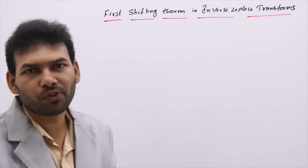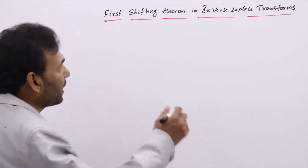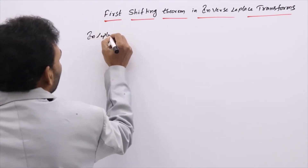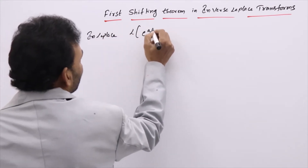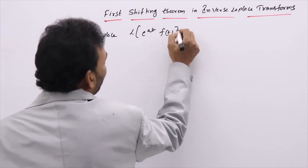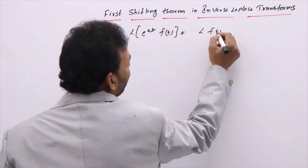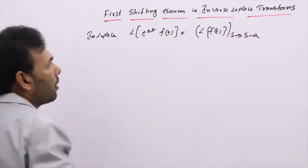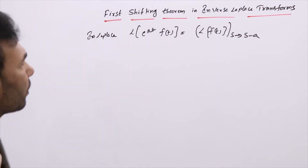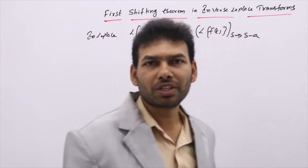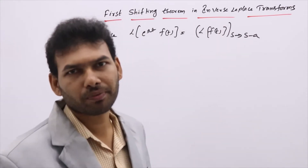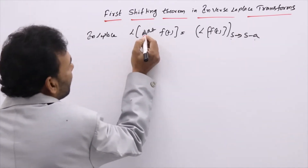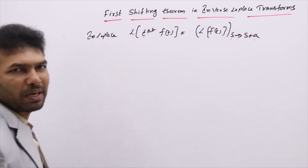We apply first shifting theorem in Laplace transform whenever e power at is in product. If e power at is in product, in Laplace we write L of e power at times f of t, and we find the Laplace transform of f of t and replace s by s minus a. If you have e power minus at, you replace s by s plus a. This is the first shifting theorem in Laplace.